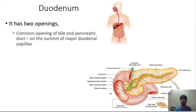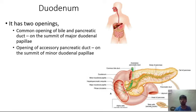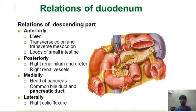The duodenum has two openings: the major duodenal papilla, which is a common opening for both the bile duct and pancreatic duct, and the minor duodenal papilla, which is the opening of the accessory pancreatic duct.